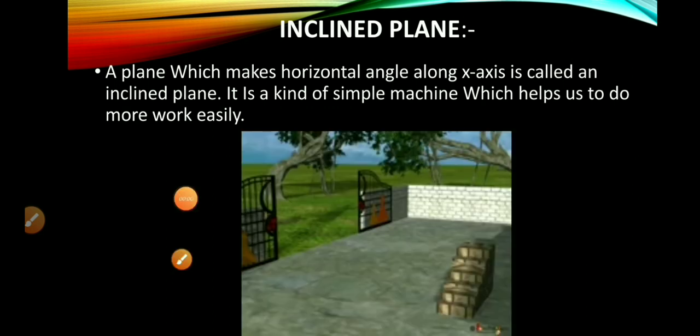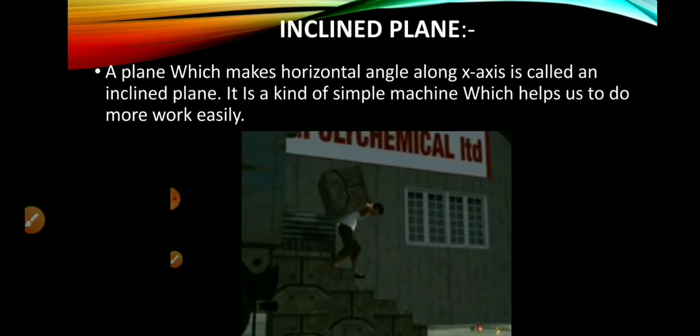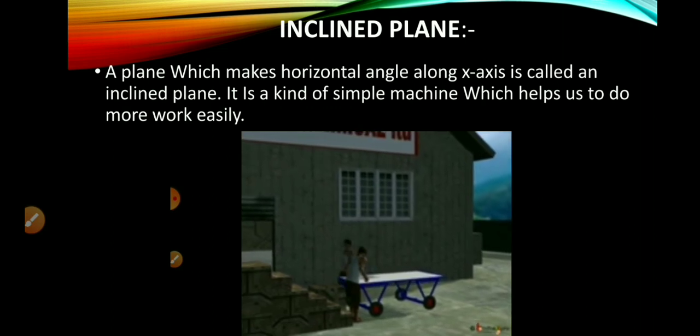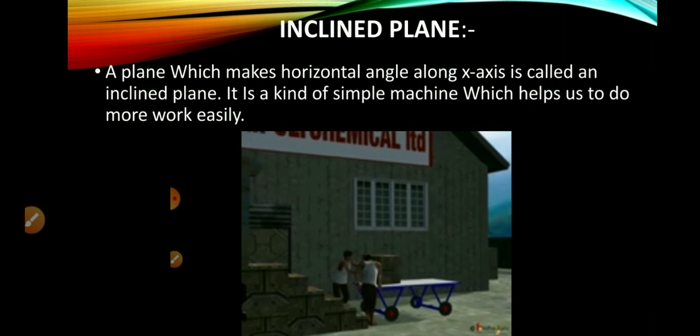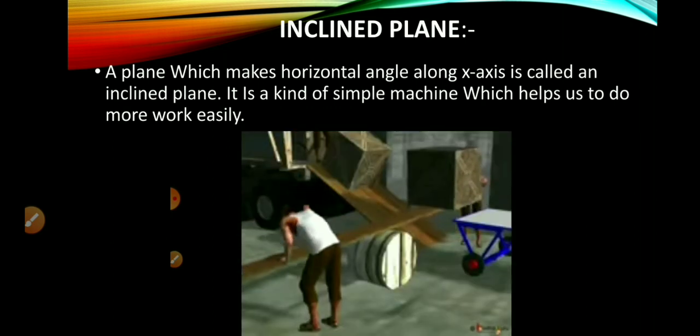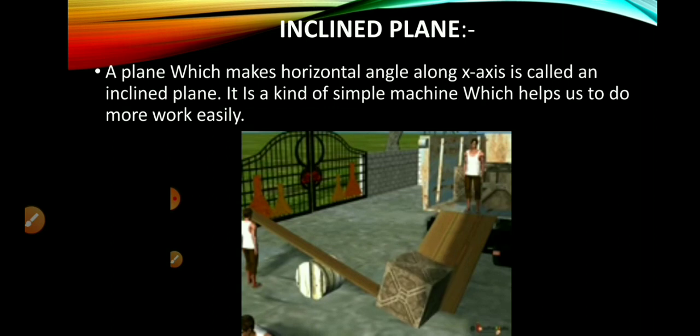In the first slide, the man is facing a problem bringing a heavy box down from the truck when he's using the stairs. But by putting that wooden plank from the truck to the ground, he was able to do it easily. So that wooden plank works as an inclined plane. Inclined planes make the work of moving things easier. That means you need to apply less force to move the object by using the slope.